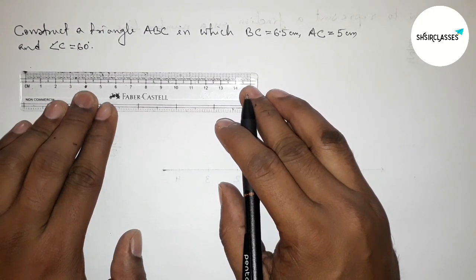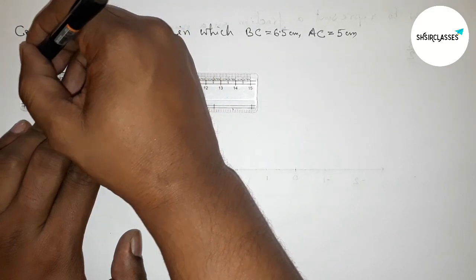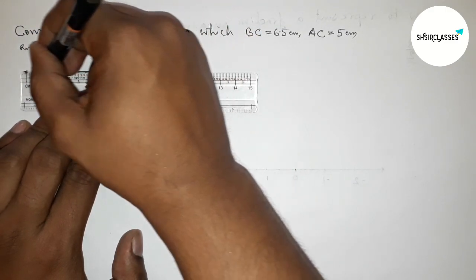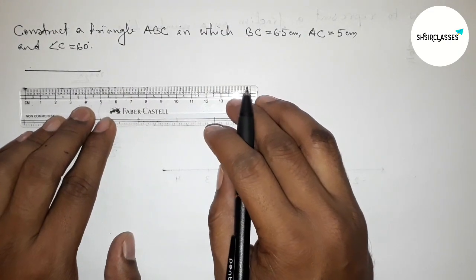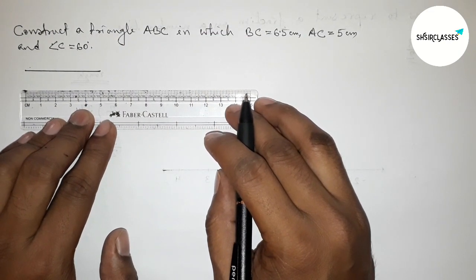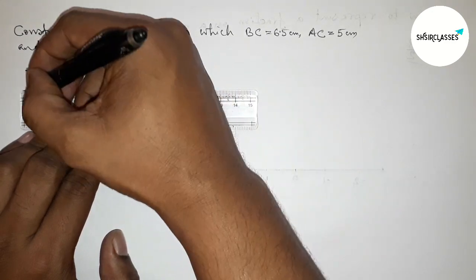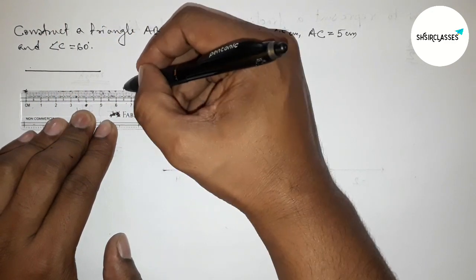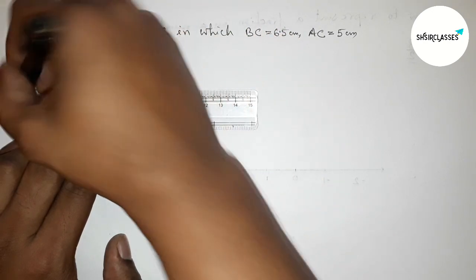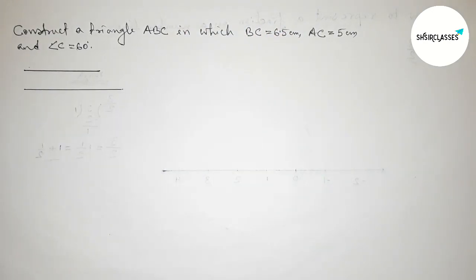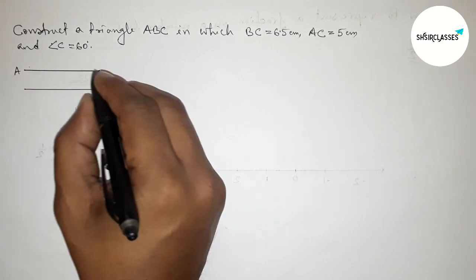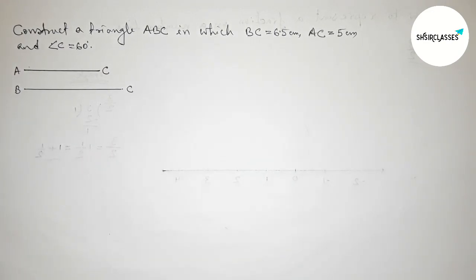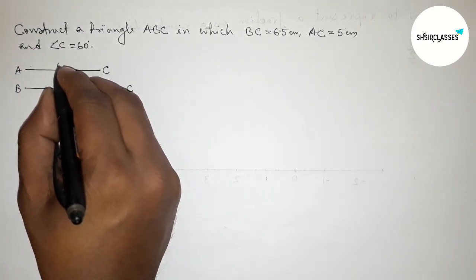First of all, let us draw the given two sides. Drawing 5 centimeter first — this is the 5 centimeter line. Then drawing 6.5 centimeter. This one is the AC line and this one is the BC line: AC equals 5 centimeter and BC equals 6.5 centimeter.